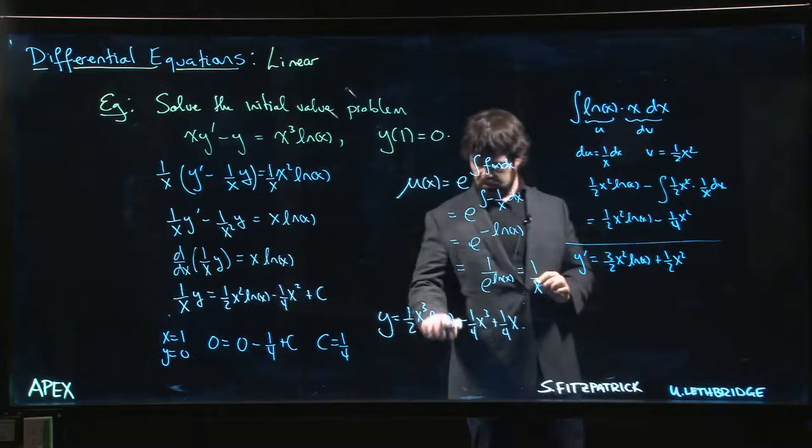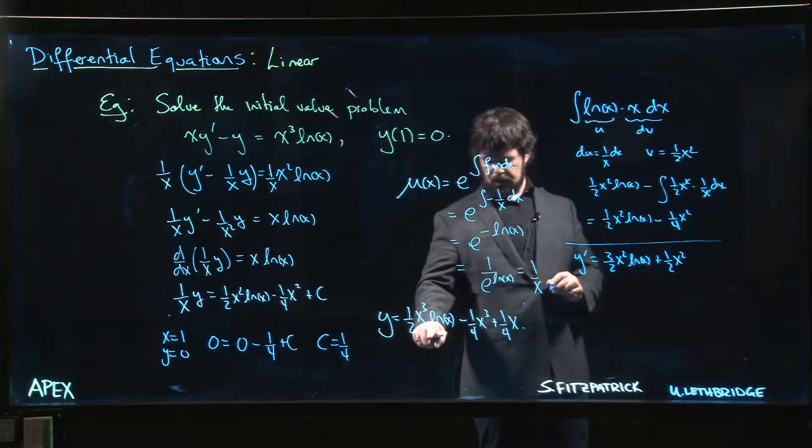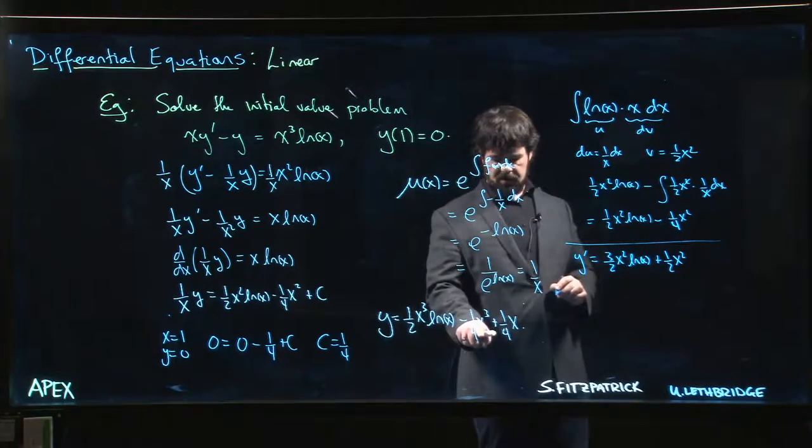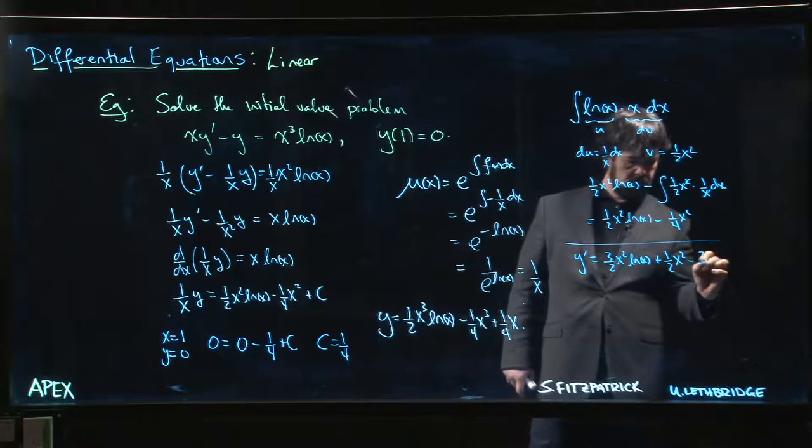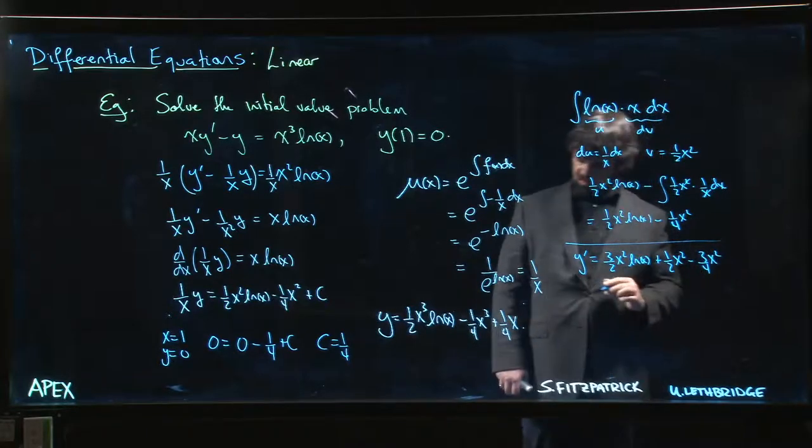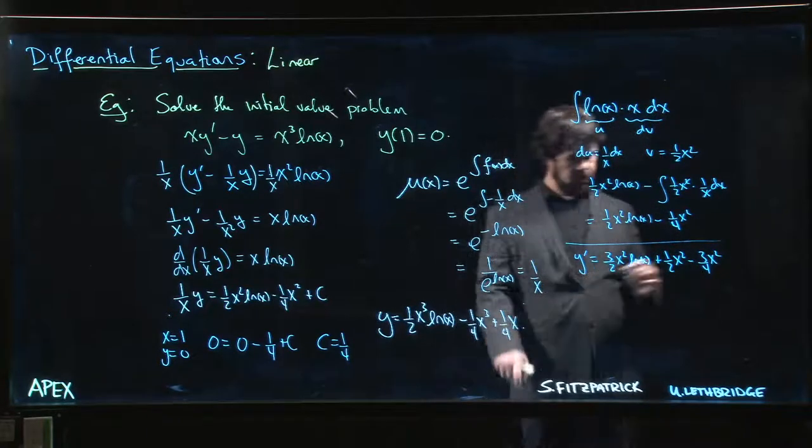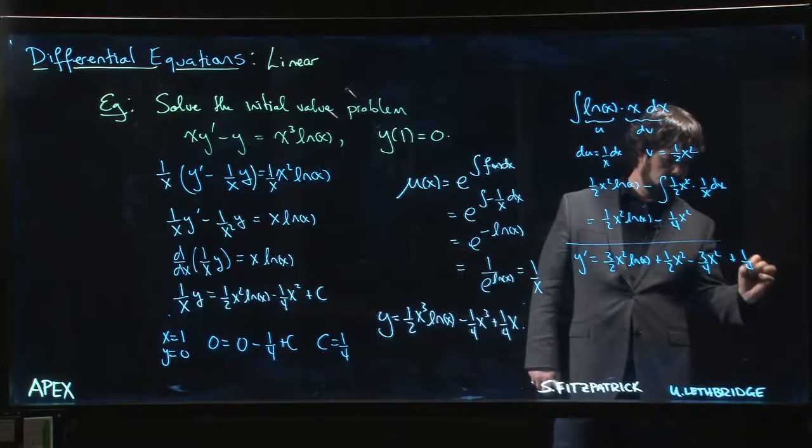And then it's going to be (1/2)x² using the product rule. Then I get -(3/4)x² + 1/4.